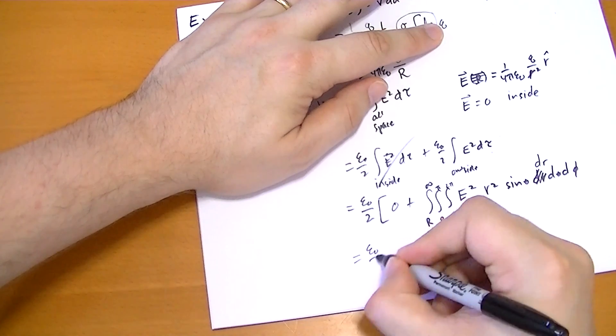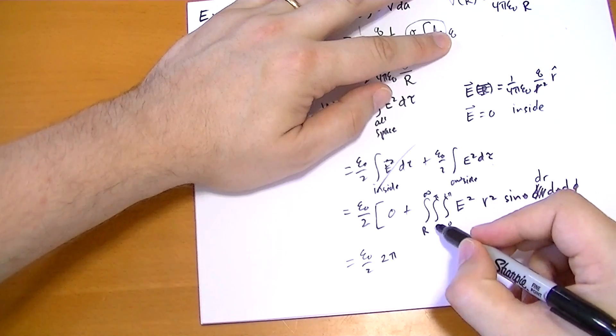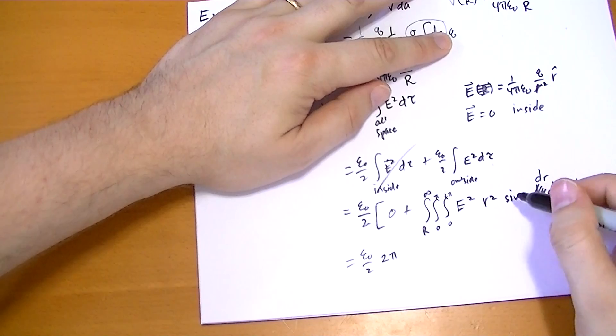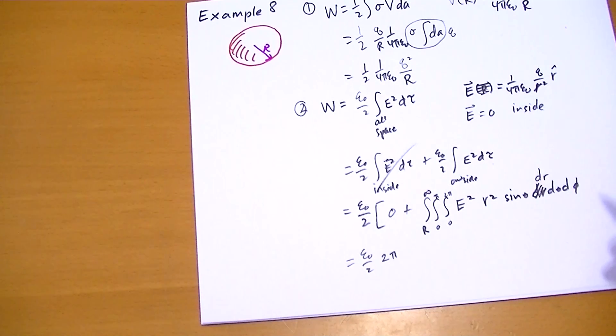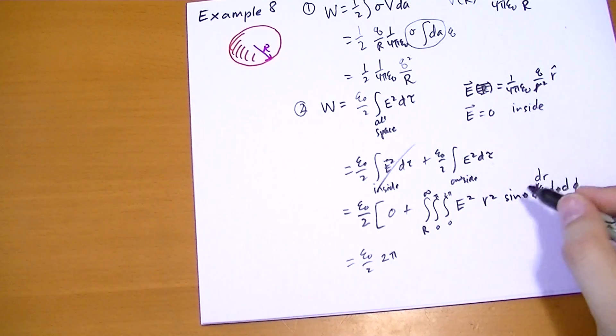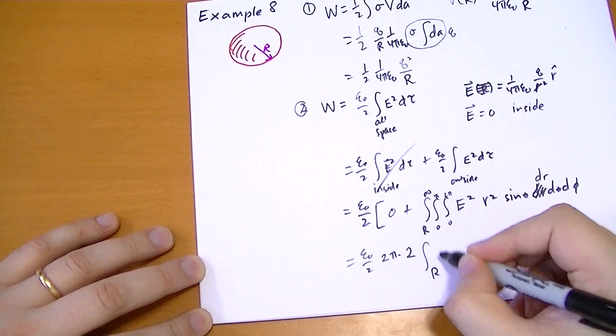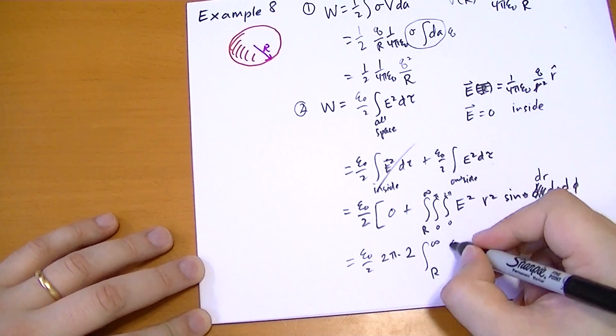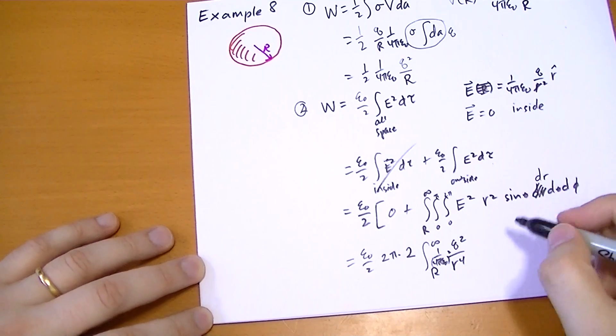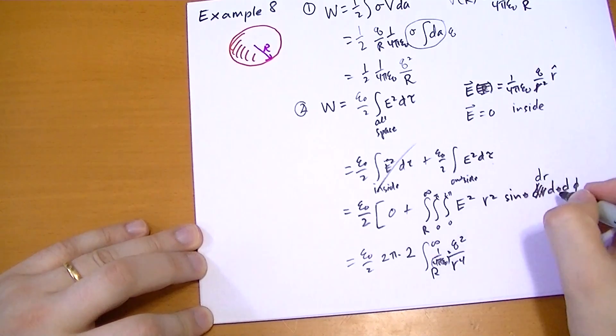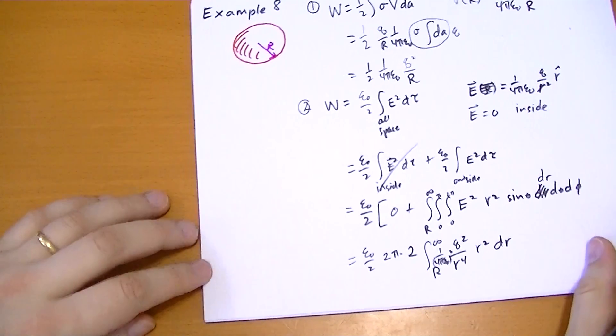So let's break that out. So we get epsilon naught over 2. The integral from 0 to 2 pi of d phi is just 2 pi. The integral of 0 to pi of sine theta d theta, the integral is minus cosine, so we go minus 1 plus, it's sine theta, it's going to be 2. Times 2. And then now we have this integral from R to infinity of E squared, which is just basically Q squared over R to the 4th, 1 over 4 pi epsilon naught squared times R squared dr.